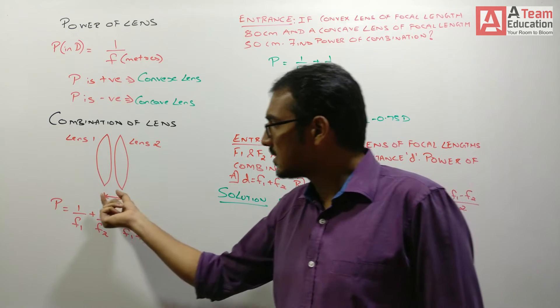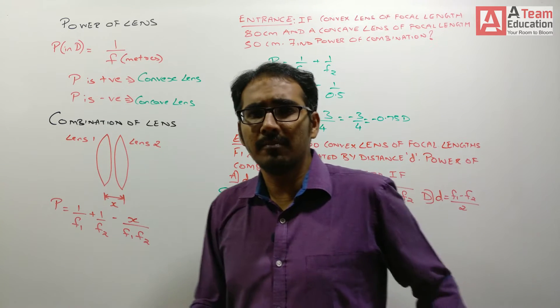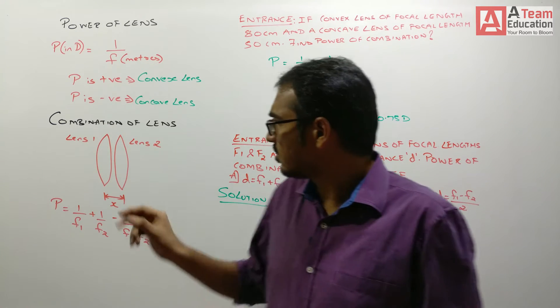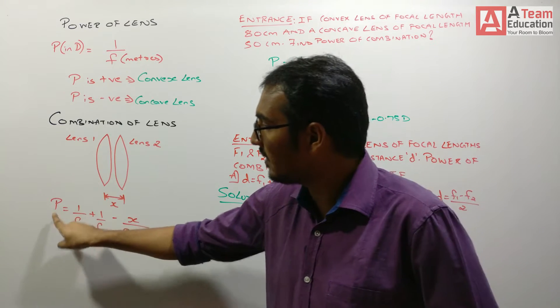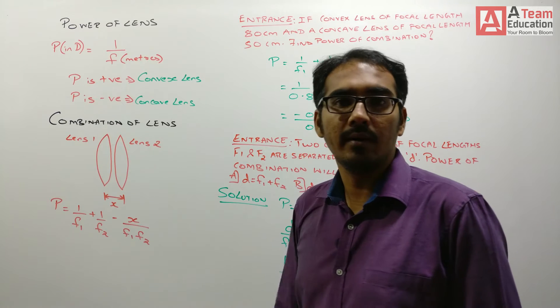Where what is this x? x is the distance of separation. Suppose we have a lens very close, so distance of separation is 0. In that case your power will be 1 upon f1 plus 1 upon f2.